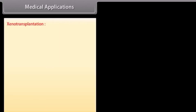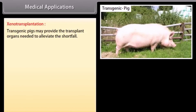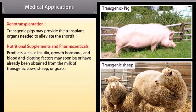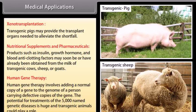Medical applications. Xenotransplantation: transgenic pigs may provide the transplant organs needed to alleviate the shortfall. Nutritional supplements and pharmaceuticals: products such as insulin, growth hormone, and blood anti-clotting factors may soon be, or have already been, obtained from the milk of transgenic cows, sheep, or goats. Human gene therapy involves adding a normal copy of a gene to the genome of a person carrying defective copies of the gene. The potential for treatment of the 5,000 named genetic diseases is huge and transgenic animals could play a role.